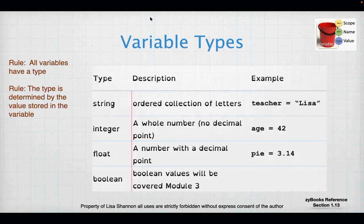There are four types of variables in Python. A string — if Python can't figure out what it is, Python's going to assume it's a string. An integer, which is a whole number like 42. A floating point number, which has a decimal in it. And a Boolean. We're not going to worry about Boolean until Module 3, because that's where we're going to need it.